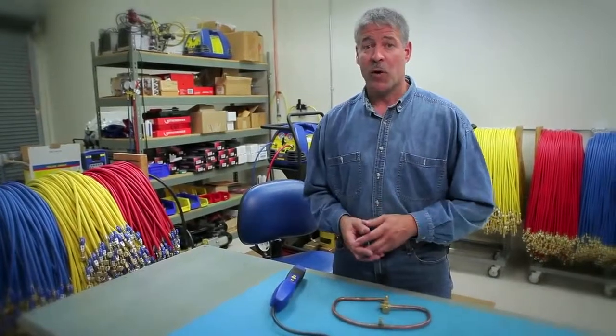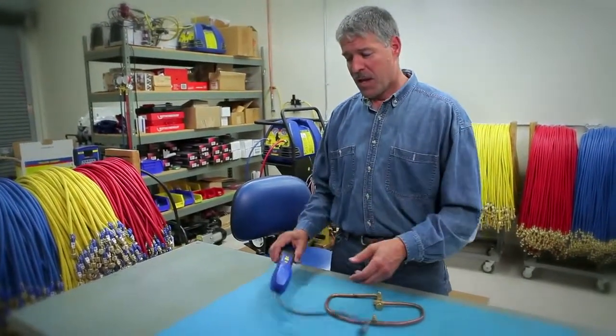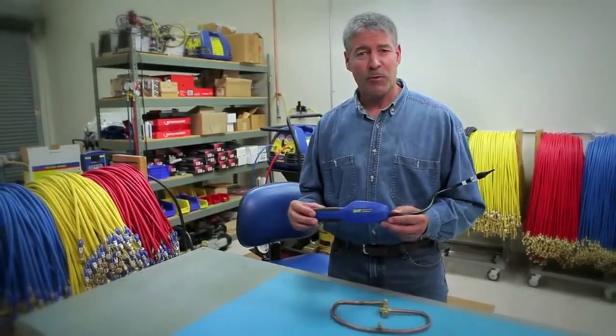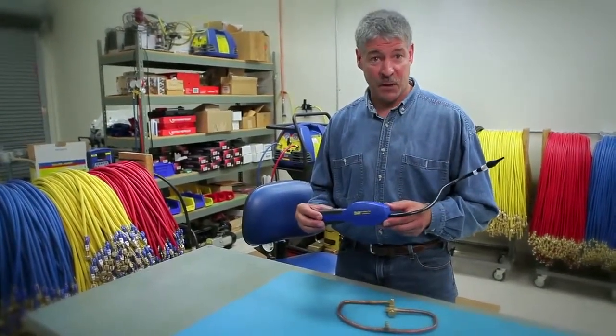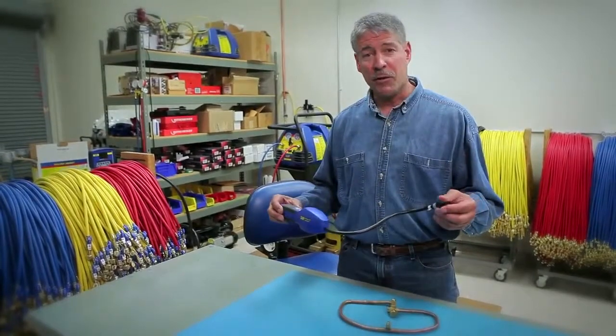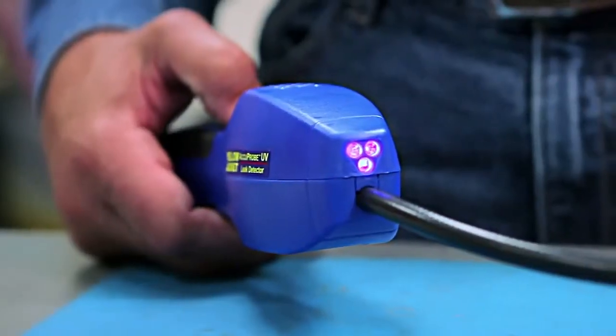There are a few different ways you can locate the source of a system leak. The Yellowjacket Acuprobe UV leak detector provides you with two of the most popular options in one tool: a sniffer utilizing an electrolyte sensor and UV technology.